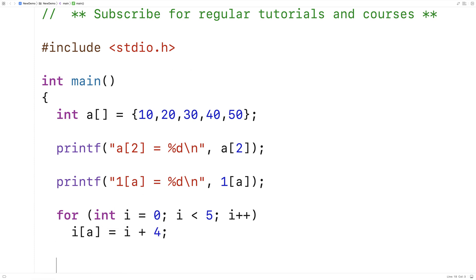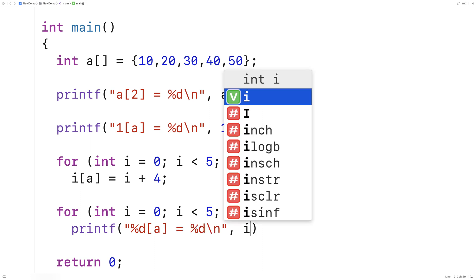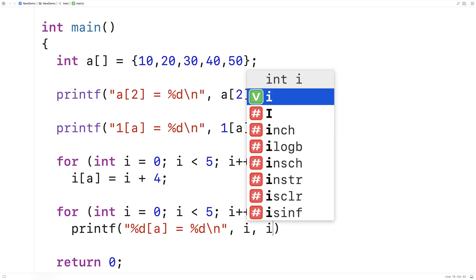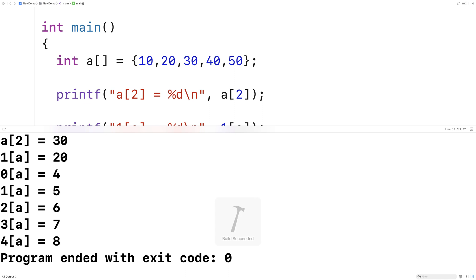And then we can print out the elements of the array this way too. We could say for int i is equal to 0, i is less than 5, i plus plus, we'll do a printf of percent d a is equal to percent d slash n, and we'll output i and we'll output i at a. So we'll save this and run it, and this will actually work.